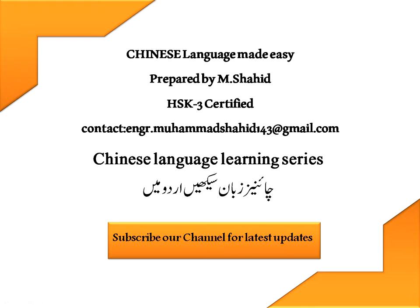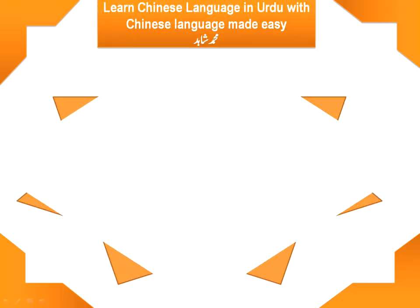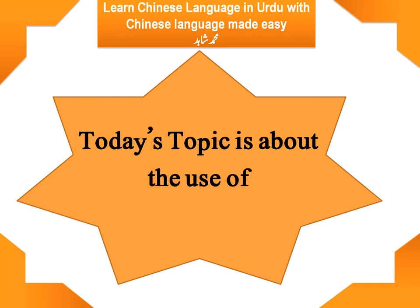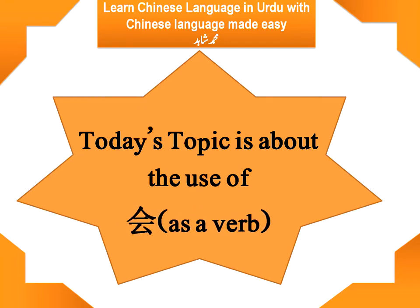So let's see what is in this lecture. Our today's topic is about the use of a word in Chinese language, and that is 会 (huì/khwe). 会 is a verb, and we are going to learn about the use of this word.